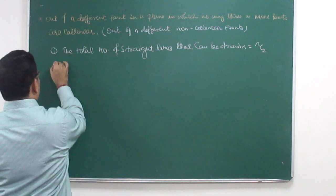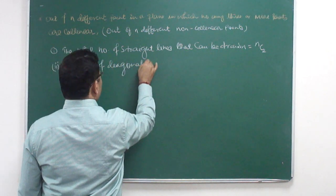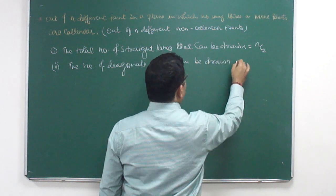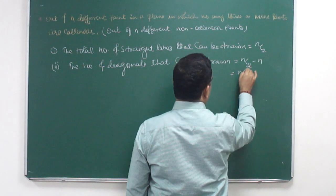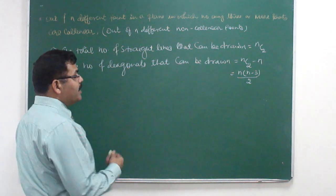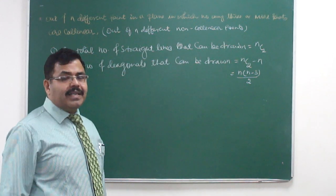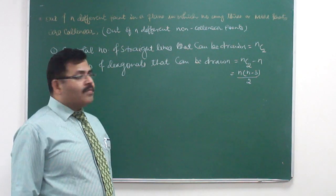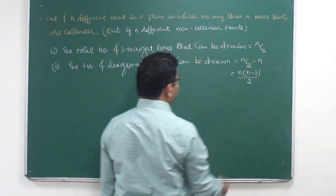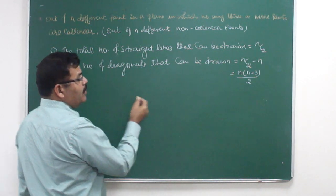Similarly, if someone wants to find the number of diagonals that can be drawn, that would be NC2 minus N, or we can write N into N minus 3 by 2. Why NC2 minus N? Because out of NC2 lines which we can draw, N lines are the exterior lines — the sides of the polygon. And out of NC2, if we subtract those N sides, we get the number of diagonals.